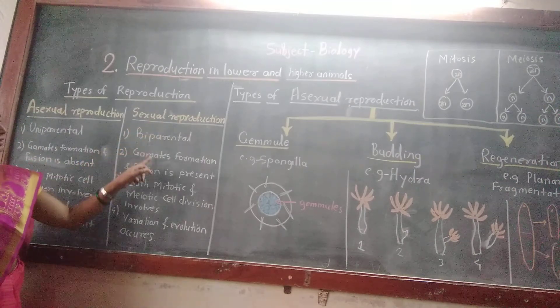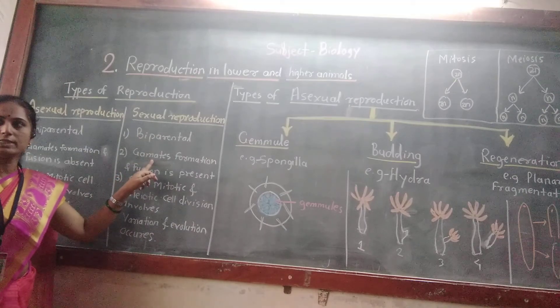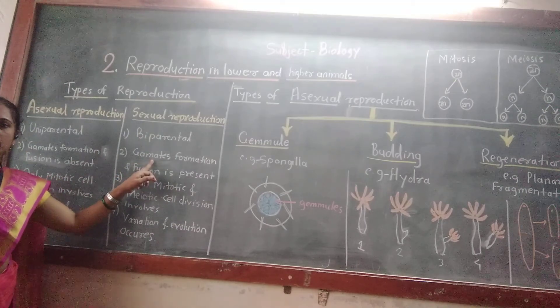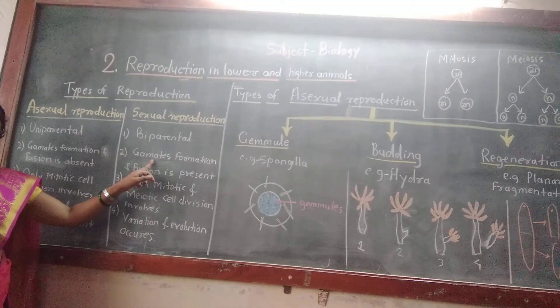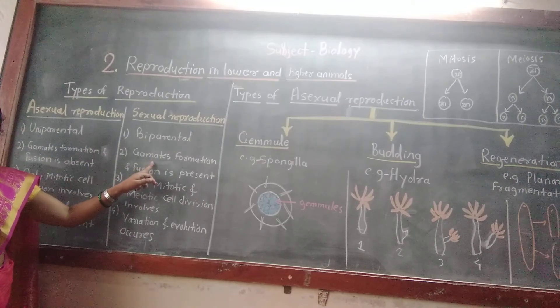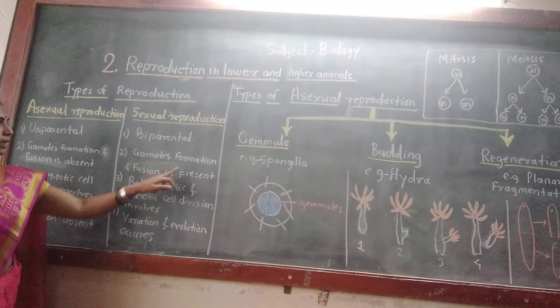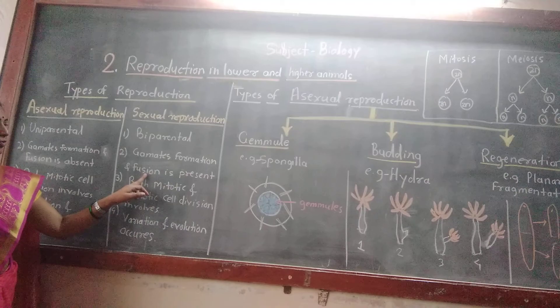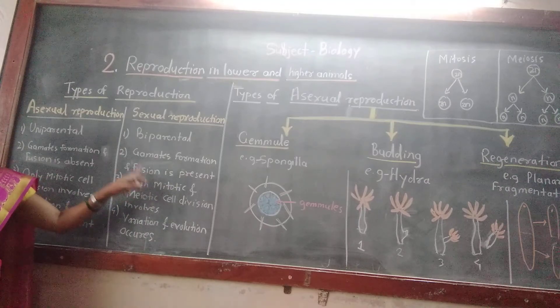In sexual reproduction, gametes are formed by the gametogenesis mechanism. The sperm and egg — these gametes — unite together or fuse together to form a zygote.